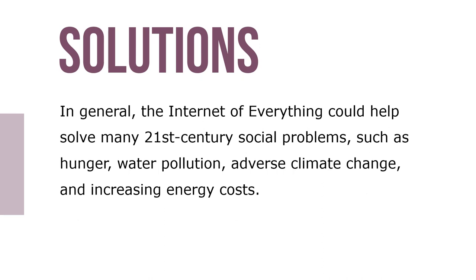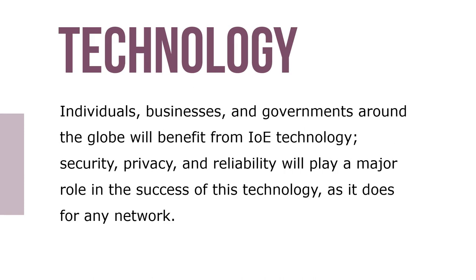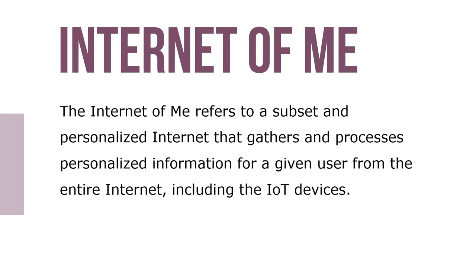In general, the Internet of Everything could help solve many 21st century problems such as hunger, water pollution, adverse climate change, and increasing energy costs. Individuals, businesses, and governments around the globe will benefit from IoE technology. Security, privacy, and reliability will play a major role in the success of this technology as it does for any network. There needs to be close coordination and communication among the three key players to protect the privacy and integrity of information being shared in this global network. The Internet of Me refers to a subset and personalized Internet that gathers and processes personalized information for a given user from the entire Internet, including IoT devices.